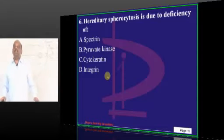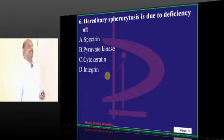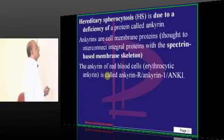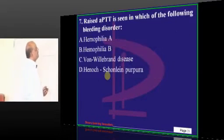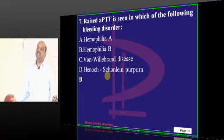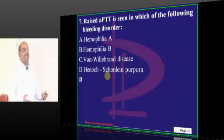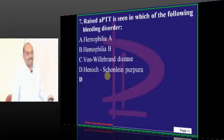In hereditary spherocytosis, ankyrin and spectrin deficiency are responsible. APTT elevation is not a feature of Henoch-Schönlein purpura. Henoch-Schönlein is a vasculitic purpura.